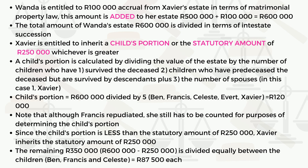Since the child's portion of 120,000 is less than the statutory amount of 250,000, Xavier inherits the statutory amount of 250,000 as it is higher. This means the remaining 350,000 — obtained by subtracting 250,000 from 600,000 — is then divided equally between the children: Ben, Francis, and Celeste. This remaining amount is called the residue.